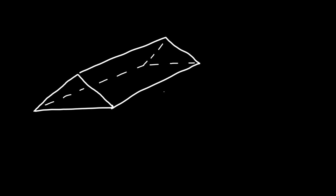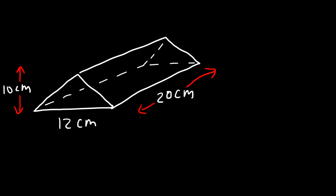So let's say that this triangular prism has a height of 20 centimeters, this part is 12 centimeters, and here this is 10. How can we calculate the volume of this triangular prism given the following information? The volume of a triangular prism is the area of the base multiplied by the height.